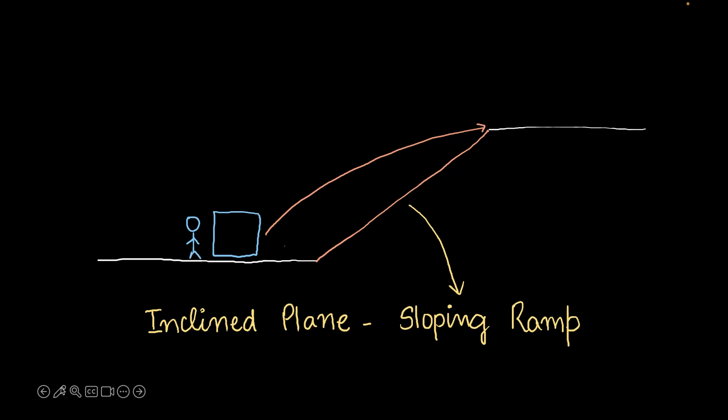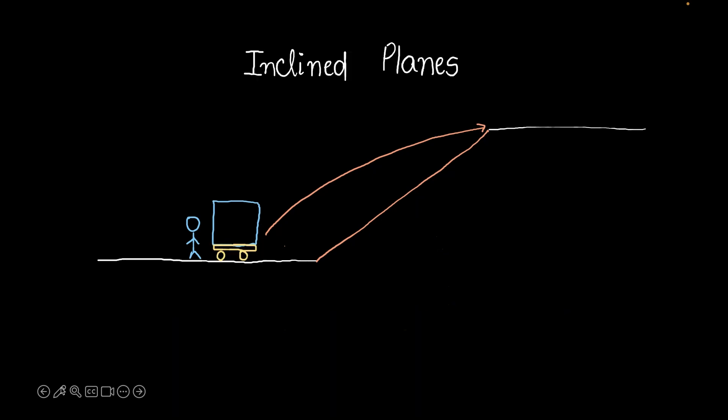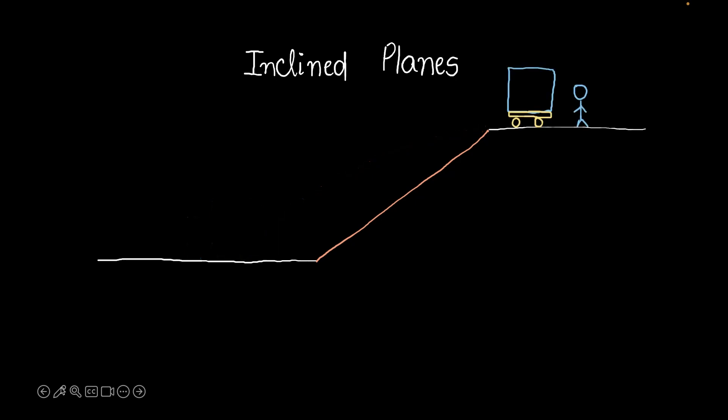It would be even easier if you had a few wheels attached to the box, or if you could place it on a trolley and use a ramp. Things become relatively easy compared to using a staircase. And getting this box down would definitely be easier than with a staircase. So basically, a ramp is an inclined plane.